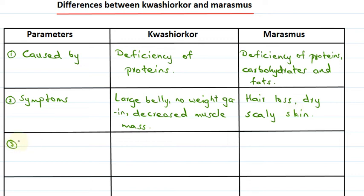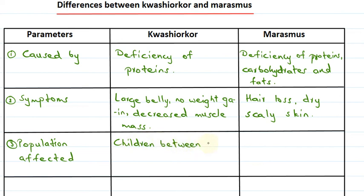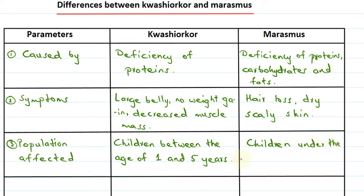The next parameter we consider is the population that gets affected. In Kwashiorkor, the affected population includes children between the ages of 1 and 5 years. In Marasmus, children under the age of 1 year are affected.